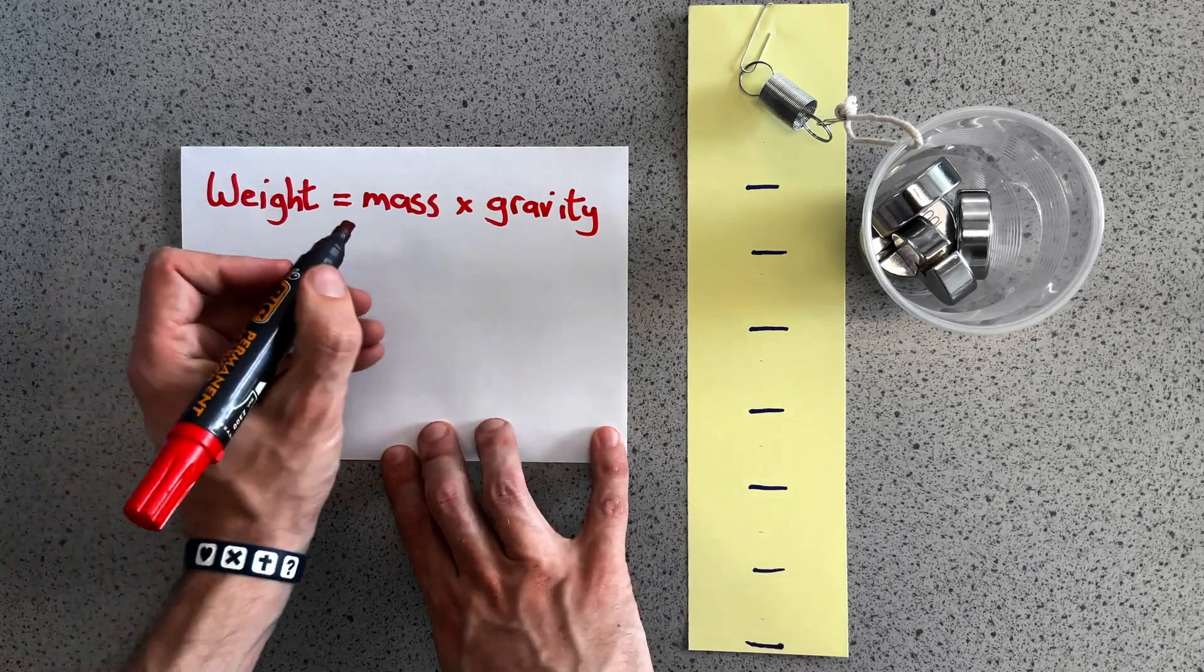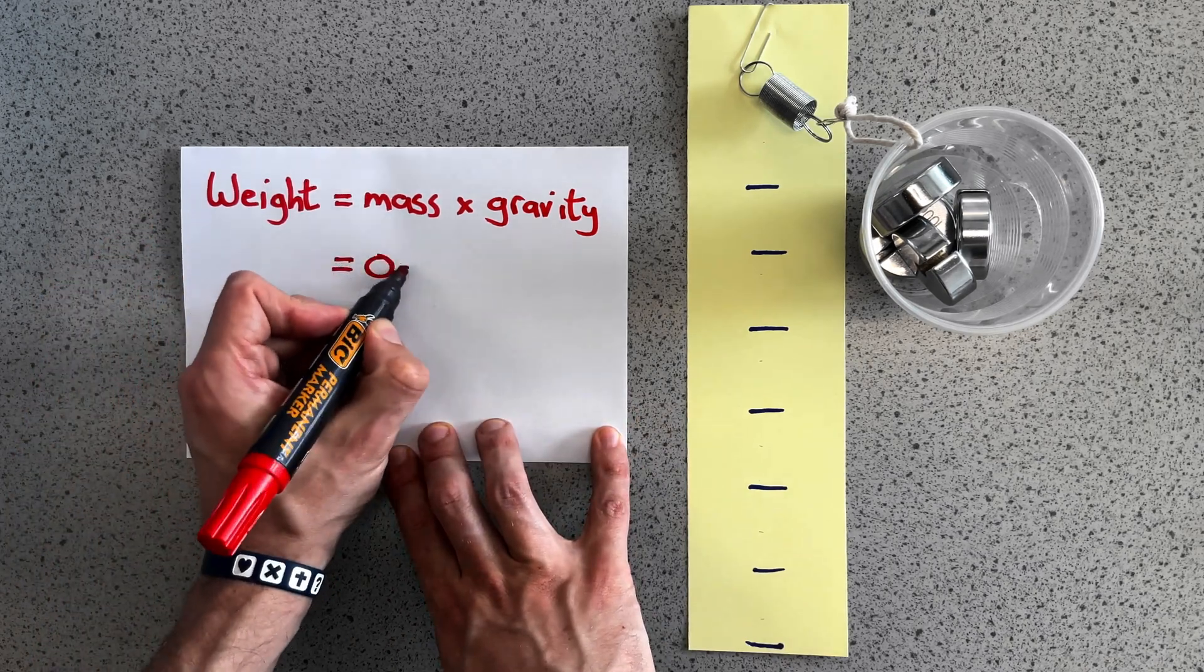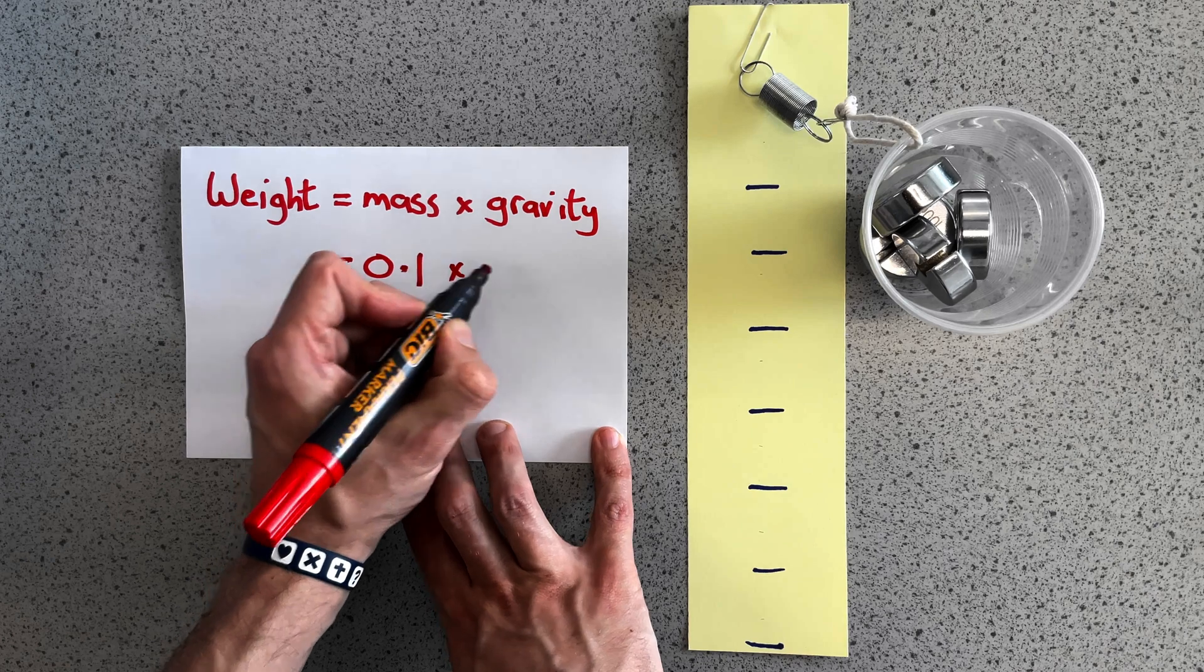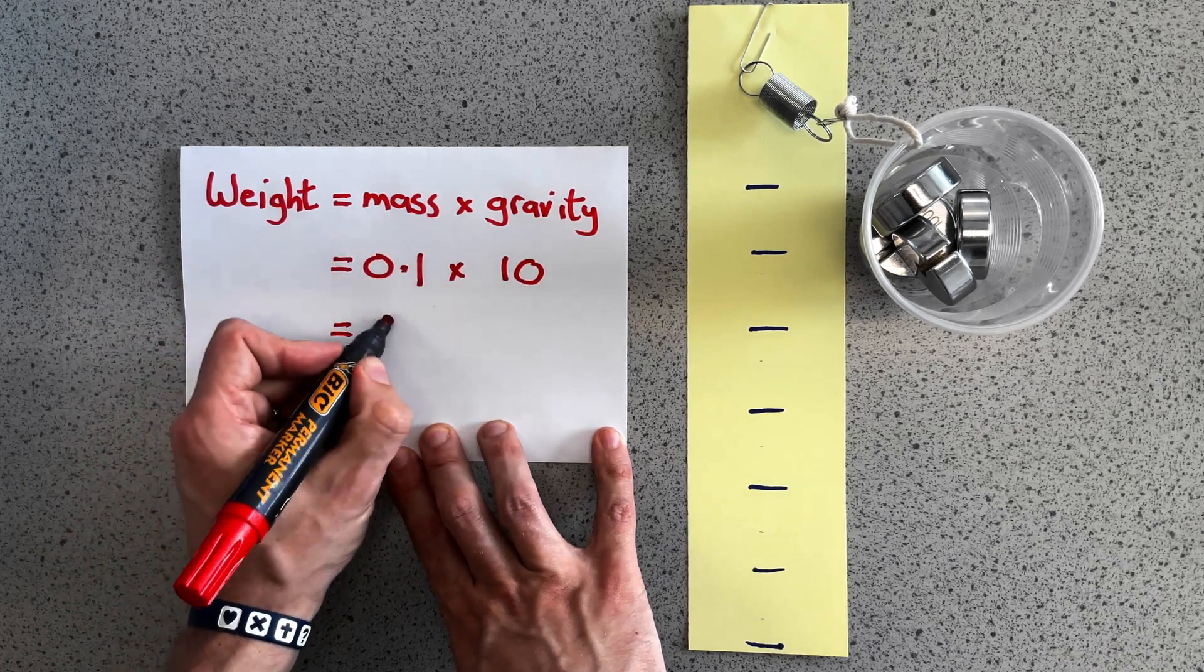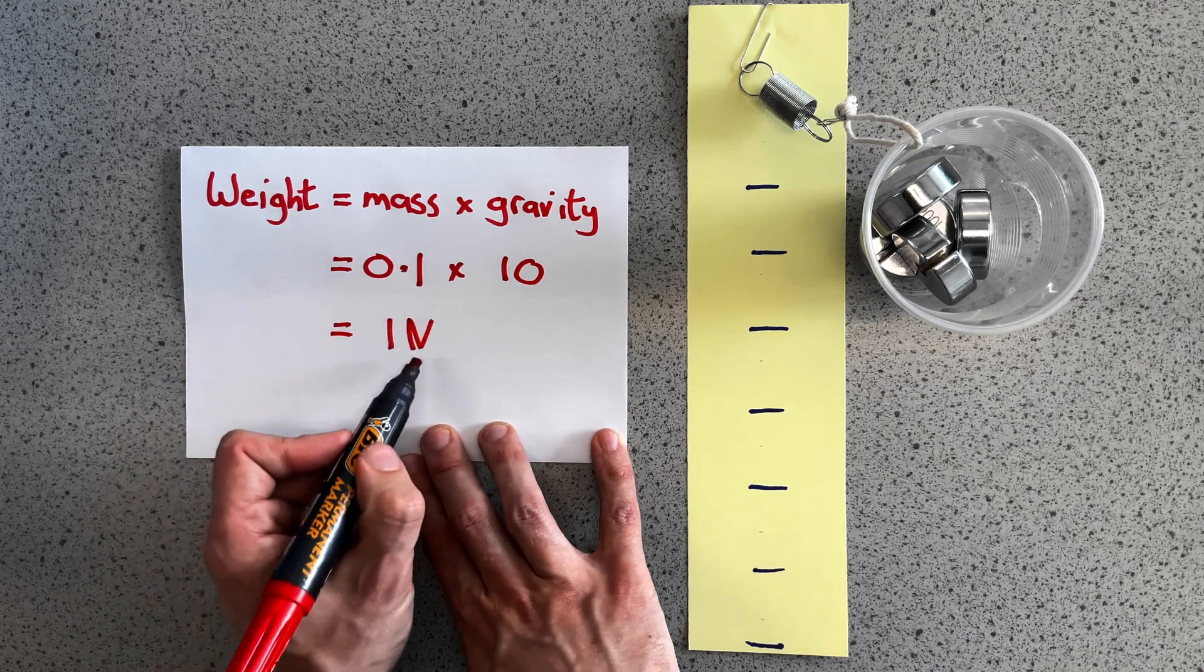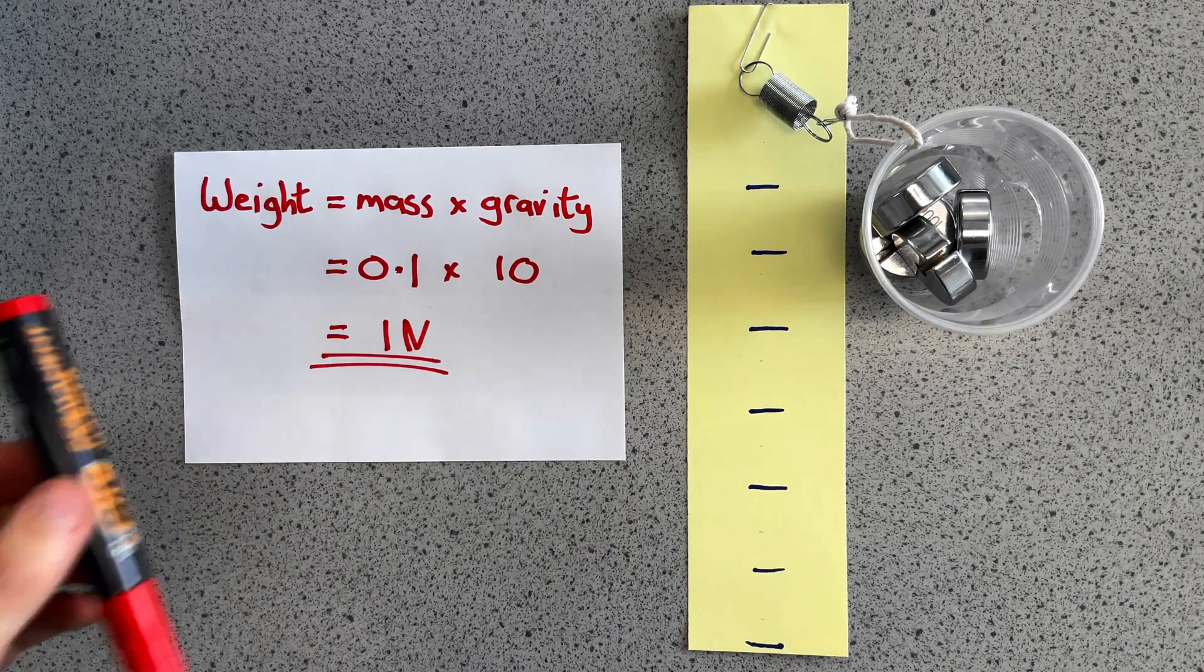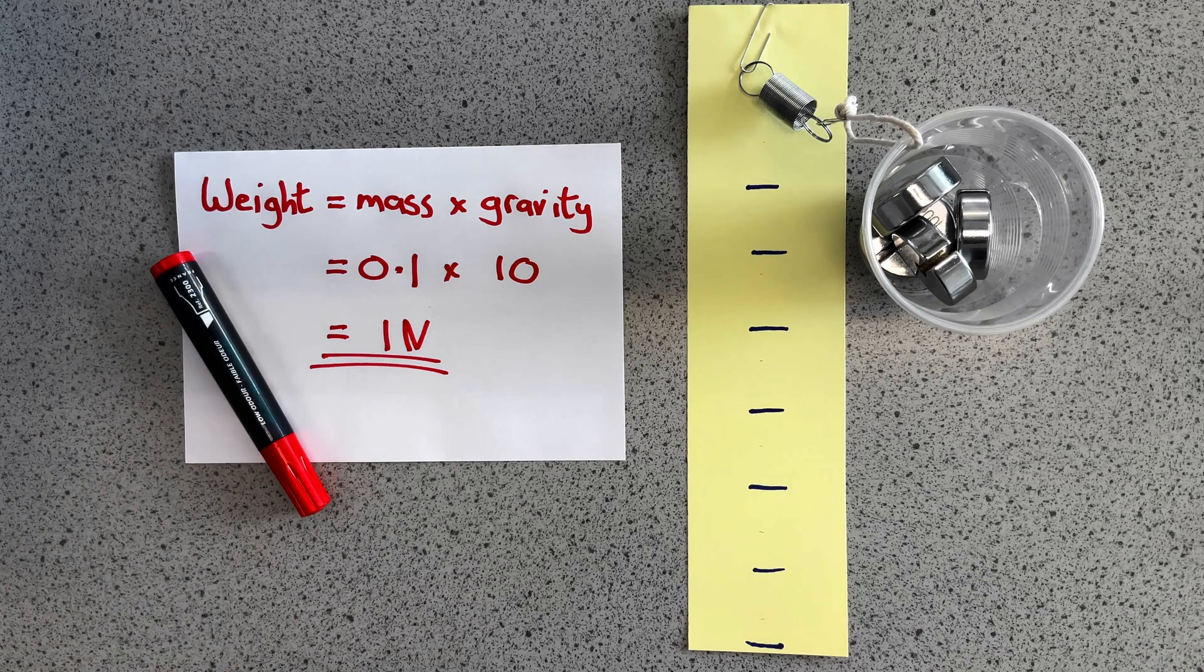We need to write our mass in kilograms. 100 grams is 0.1 kilogram and on earth gravity is 9.81 which is about 10. 0.1 times 10 is 1. So each of our 100 gram masses causes a weight of 1 newton.